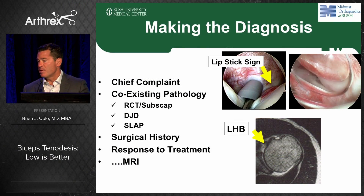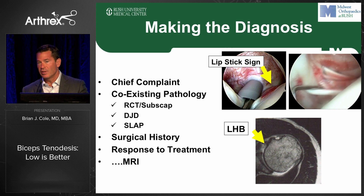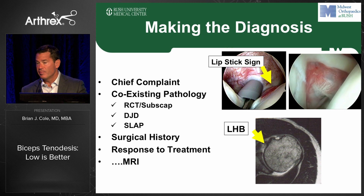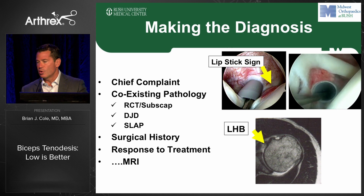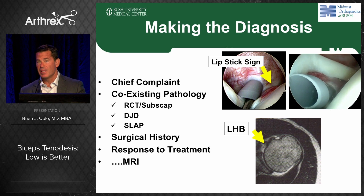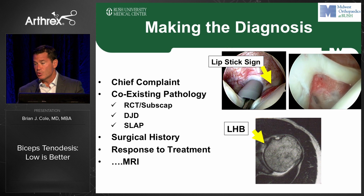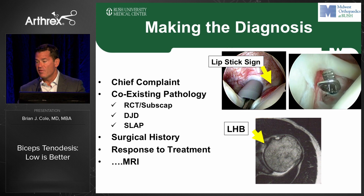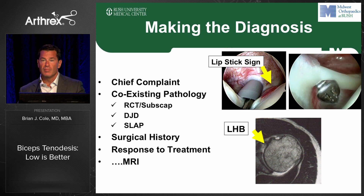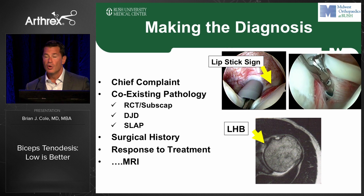The first thing about biceps pathology is making a proper diagnosis, which really comes down to something basic we all learn in medical school: the chief complaint. Many of these individuals are going to have coexisting pathology. It's really not that common to see people with just isolated biceps tendonitis. Typically you'll see it with cuff pathology, not uncommonly with osteoarthritis, and most commonly with labral pathology.